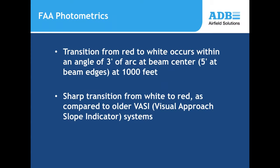For photometrics in both the FAA and ICAO market, they define the light output — specifically the red and white transition of the PAPI — occurring within an angle of three minutes of arc at the beam center, five minutes of arc at the beam edges at 1,000 feet or 300 meters, and that it be a sharp transition from white to red.